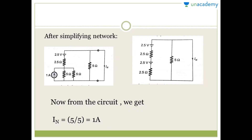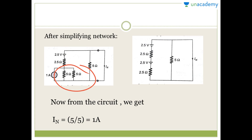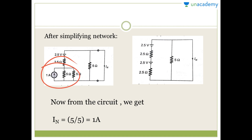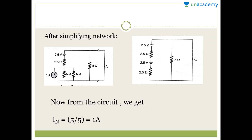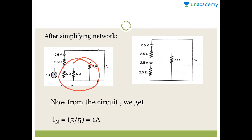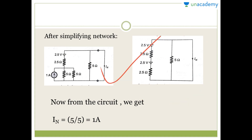After simplifying the network, if you calculate the parallel combination of 5 ohm and 5 ohm you get 2.5 ohm. Then again you can convert this current source into a voltage source. Applying source transformation again and converting the current source into a voltage source, on simplifying you get the reduced circuit. Now in order to find this current you should know what current is going through each branch.